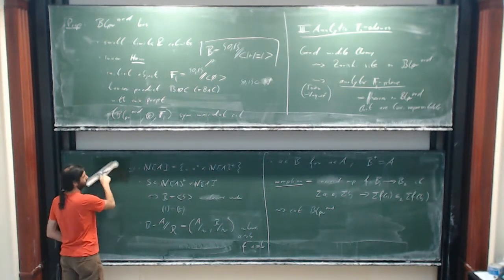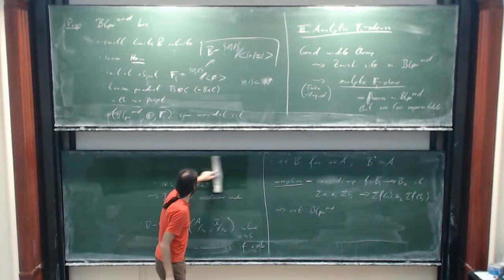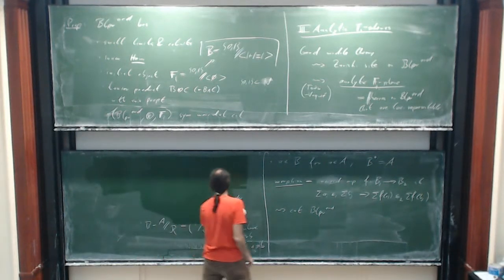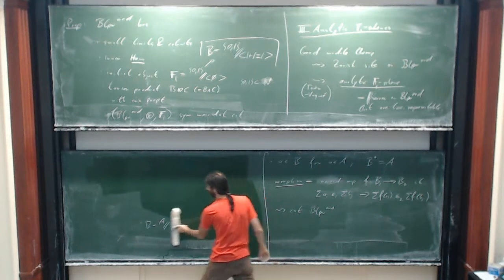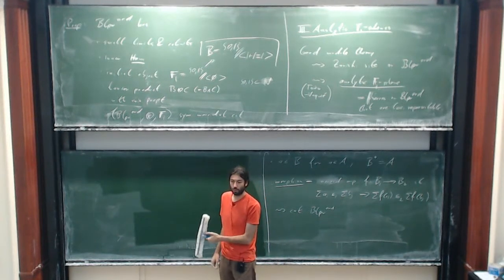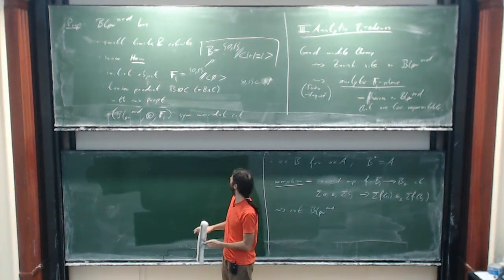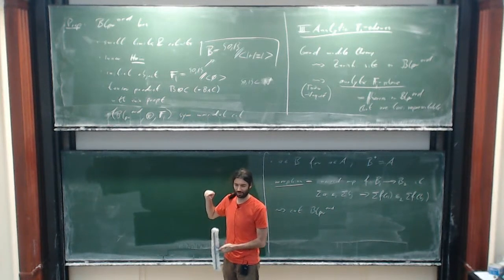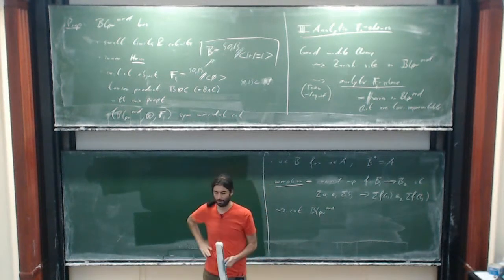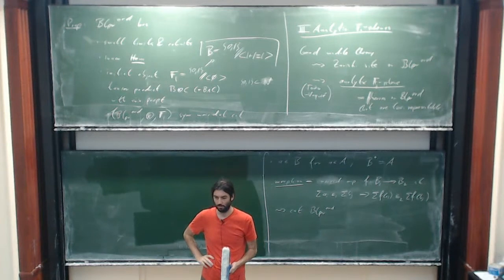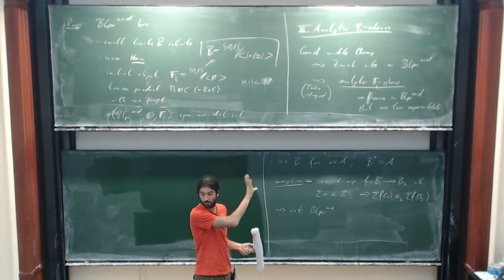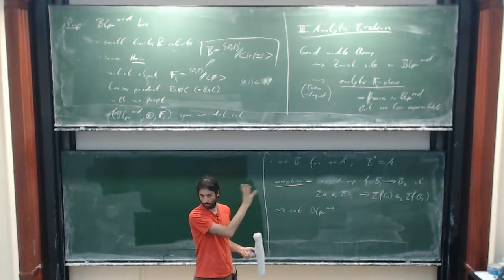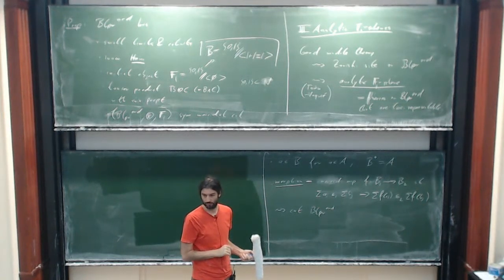Associating a Zariski site, one can apply the machinery for this category, which defines what I call an analytic F1 scheme — as sheaves on the site that are locally representable. What I want to say is that this associated geometry really works, but I stay in the algebraic context here.